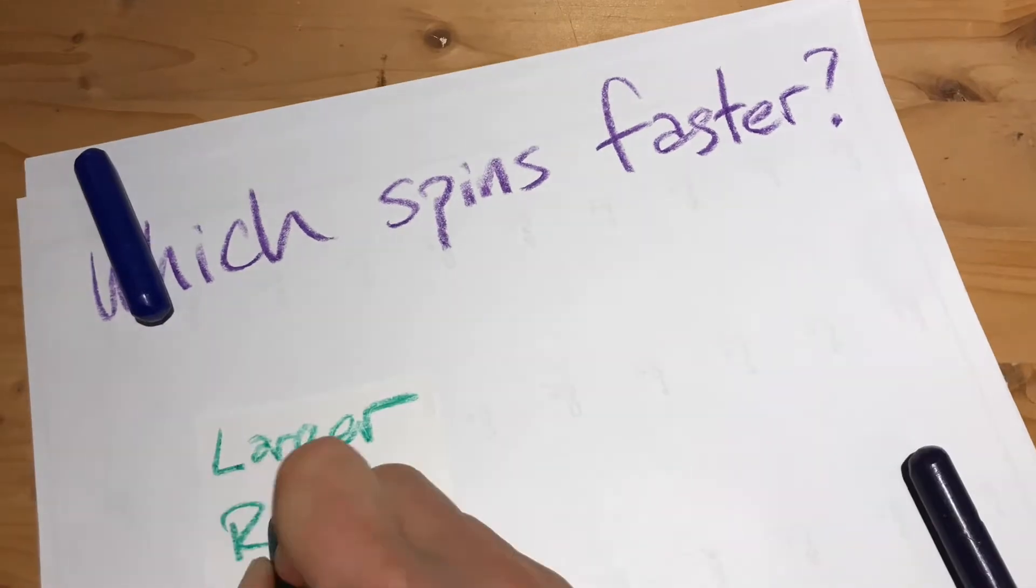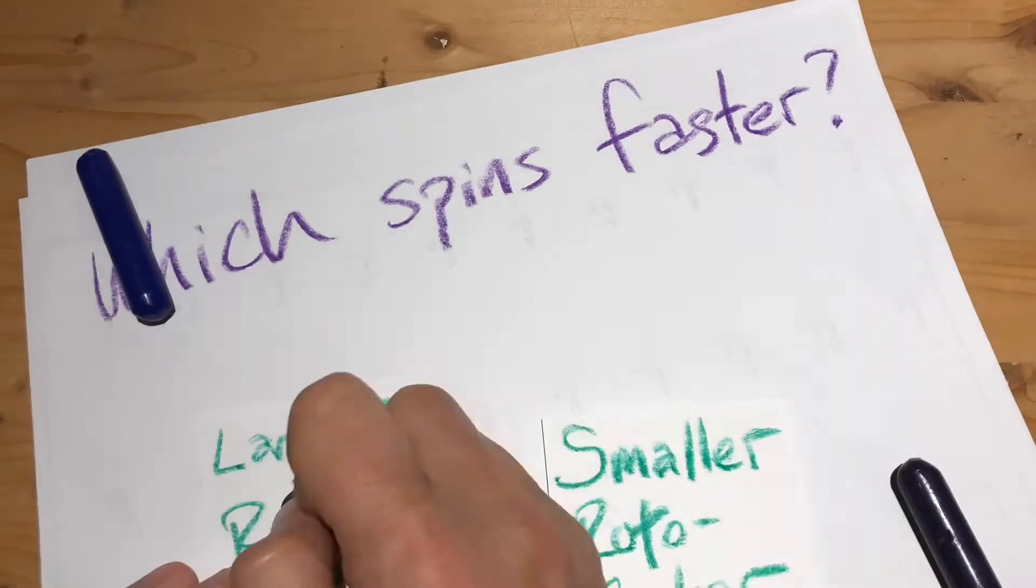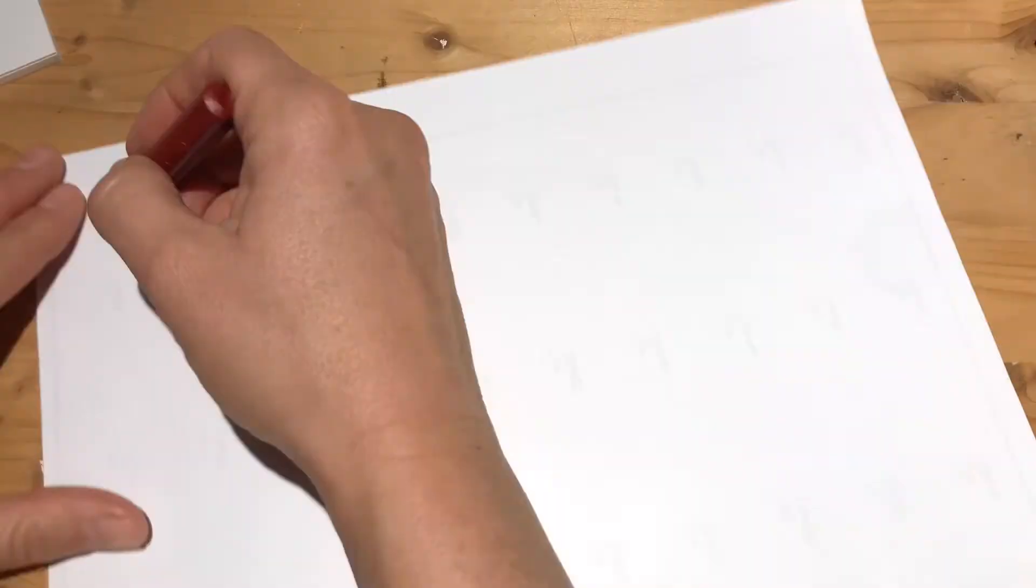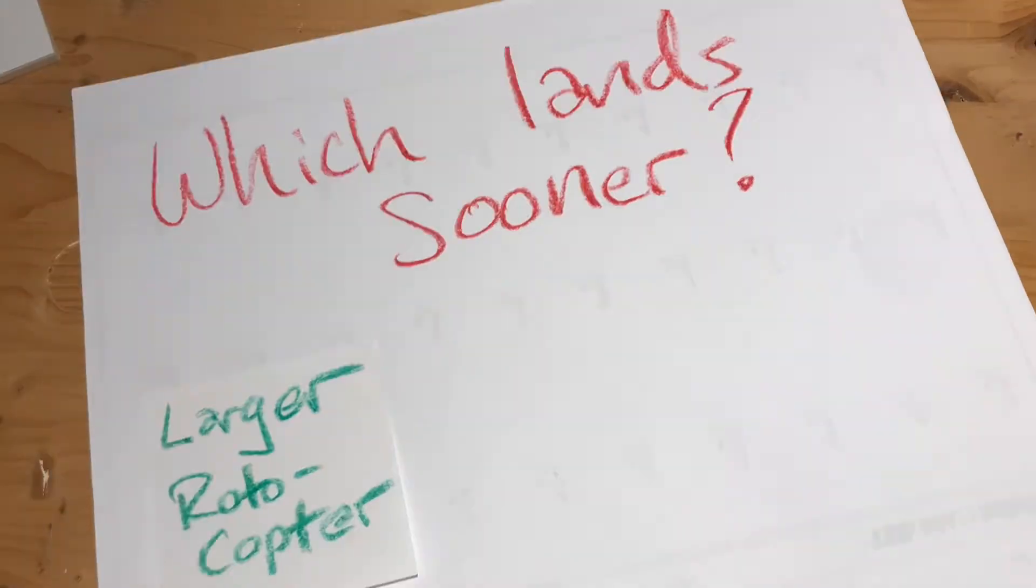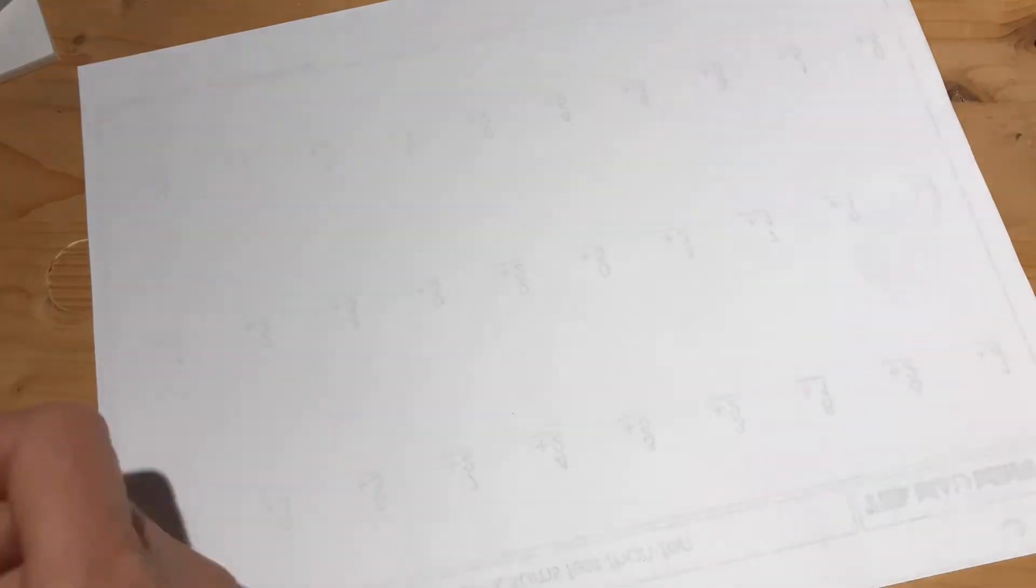So which spins faster? A larger Rotocopter or a smaller Rotocopter? What about which one lands sooner? The larger or the smaller Rotocopter?